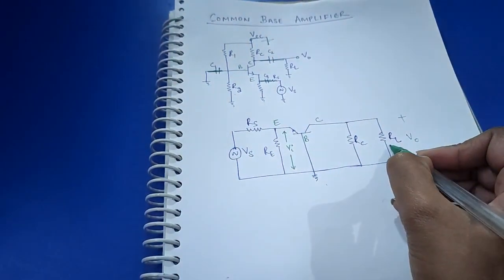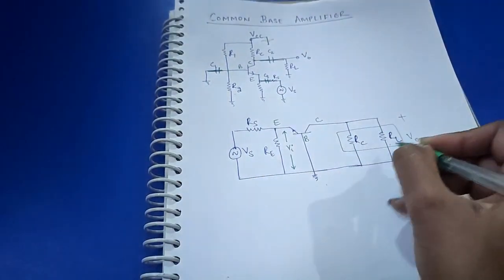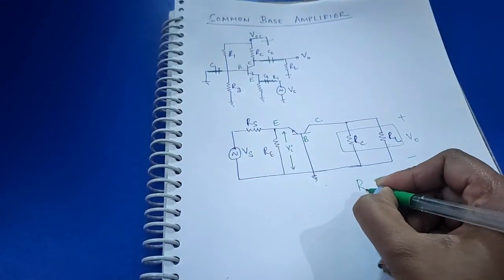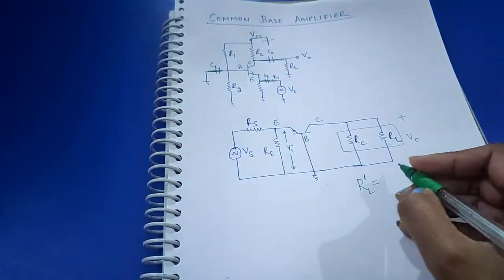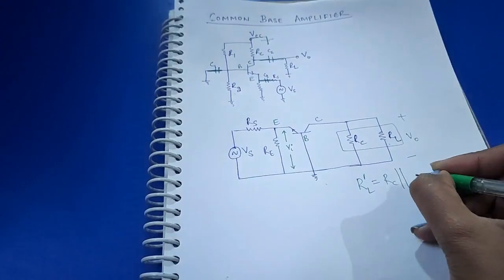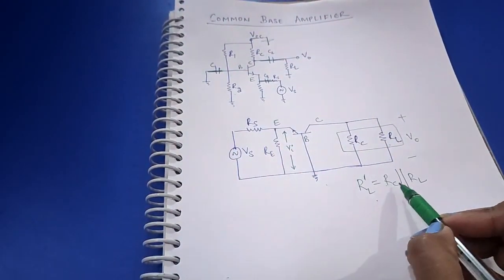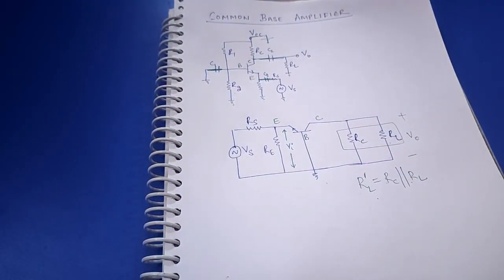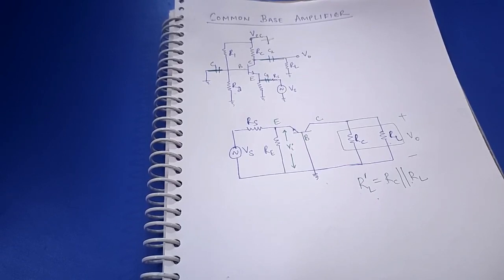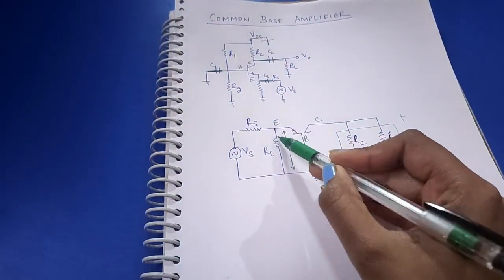Both RC and RL are connected in parallel, so we can find an equivalent resistance. I'm naming it RL' for the parallel combination of RC parallel to RL. Now let's draw the h-parameter model of this circuit — we need to replace the BJT with its h-parameter model.